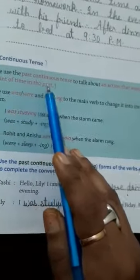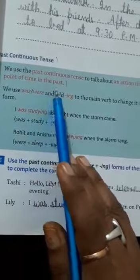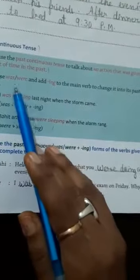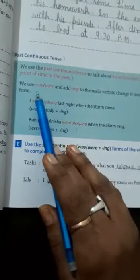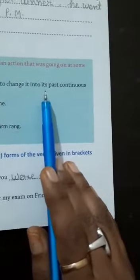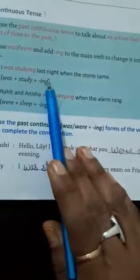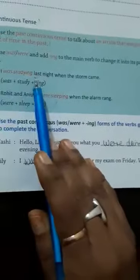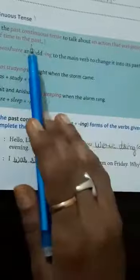What is the rule to change the verb in past continuous tense? We use was or were in past continuous tense. We add -ing to the main verb to change it into its past continuous tense form. I was studying last night when the storm came. You can see here, this shows an action that was going on at some point in the past.